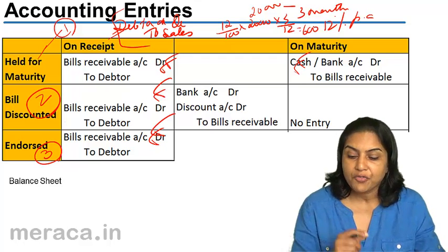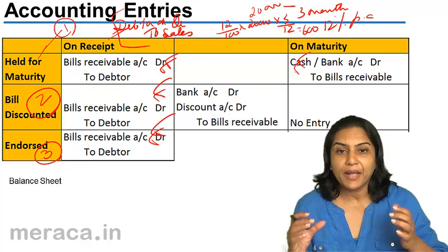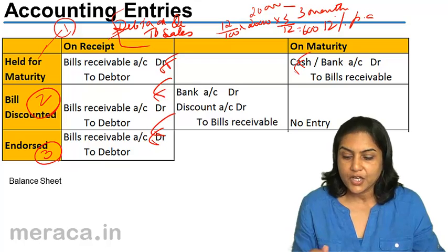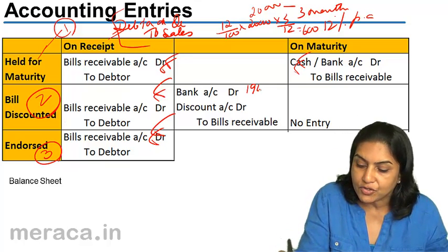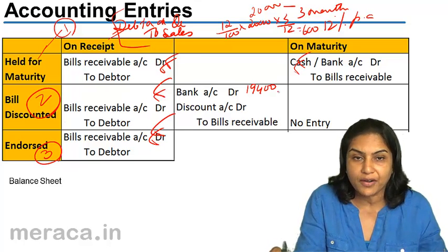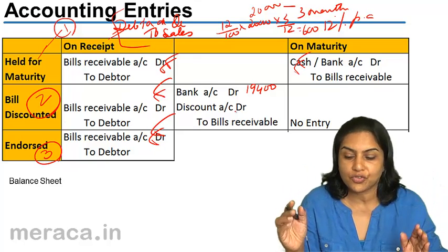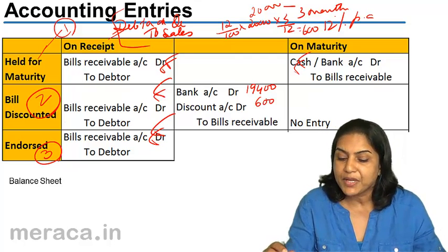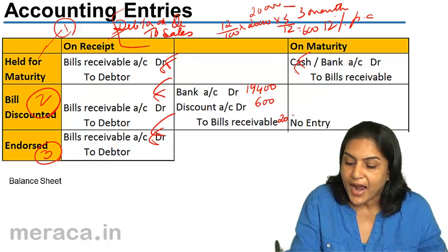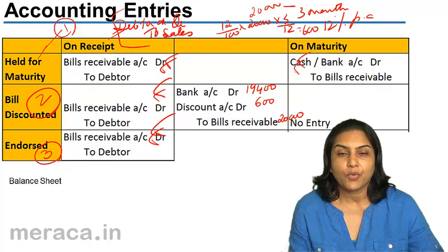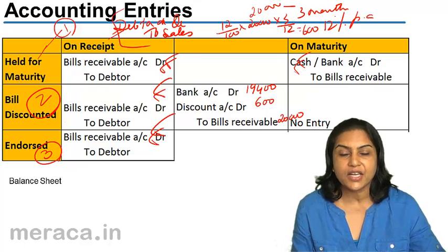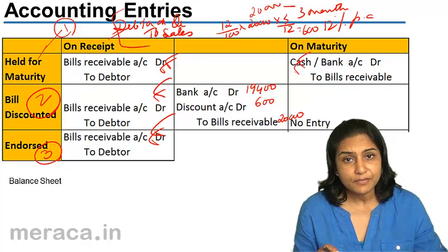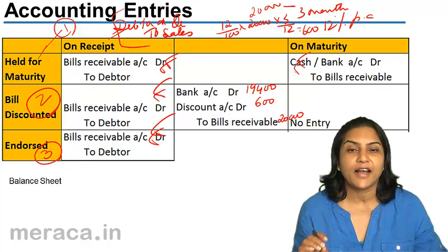What would be the accounting entry? We have taken the bill to the bank; the bank gives us $19,400. So bank account debit $19,400 — the bank credits our bank account $19,400. The discount element of interest for the three months — $600 — will appear as an expense in our books. And the bills receivable account, which we handed over to the bank, had a value of $20,000. Therefore, when we discount the bill with the bank, the entry is: bank account debit with the amount received, discount account debit with the amount of discount, to bills receivable with the value of the bill.